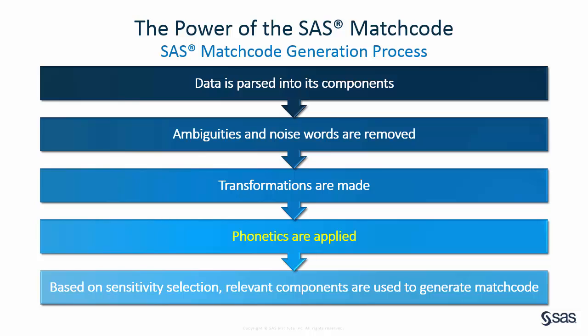Next, phonetics are applied. For example, in English language match definitions, PH is changed to F, since English words with PH sound like an F. Finally, the match code is generated based on the relevant components for the specified sensitivity selection. For example, the out-of-the-box name match definition for the English language locale at a sensitivity setting of 85 does not use the middle name token. However, at a sensitivity setting of 90, it uses the first character or initial from the middle name token.